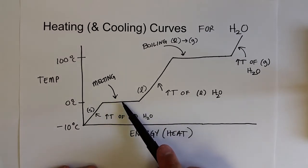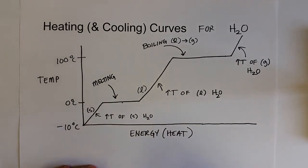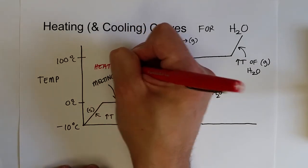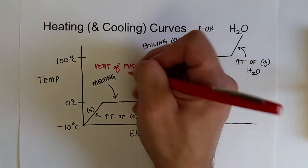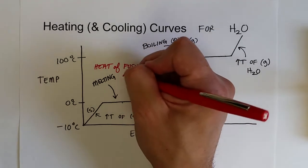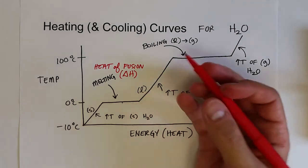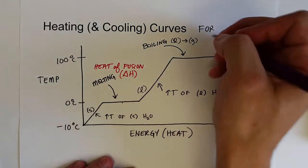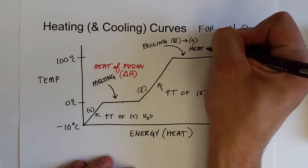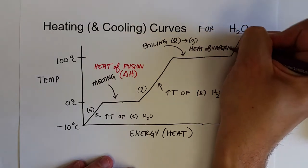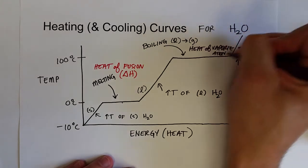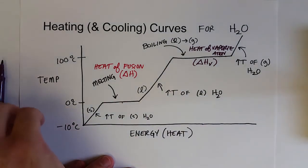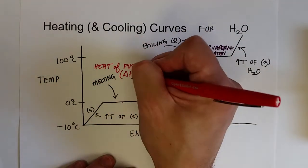The amount of energy it takes to melt and to boil are dictated by thermodynamic properties. The energy required to melt a substance is called the heat of fusion, abbreviated delta H sub F — more formally, the change in enthalpy. The energy it takes to boil the liquid is called the heat of vaporization, abbreviated delta H sub V or delta H VAP.